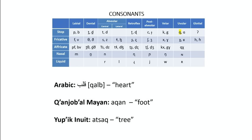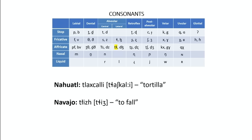The uvular stop, found in Arabic, Mayan, and some Inuit languages, is also quite rare, and the lateral affricate, tl, found in Nahuatl and Navajo, is even rarer than that.